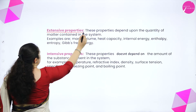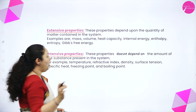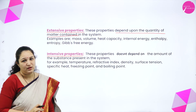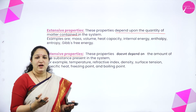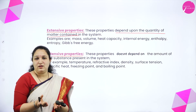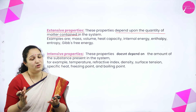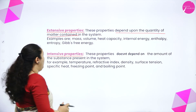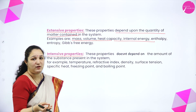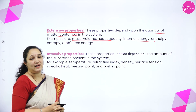Next we have extensive property and intensive property. The property which depends on the quantity of matter contained in a system is called the extensive property. For example, if I take 1 ml of water, its mass is 1 gram; if I take 100 ml of water, the mass is 100 grams. Similarly, volume occupied can vary depending on the amount of substance. Properties like mass, volume, heat capacity, entropy, enthalpy, and Gibbs free energy are extensive properties.